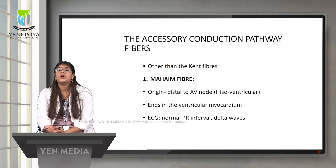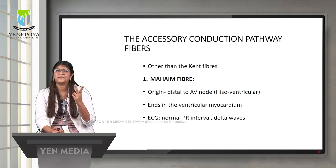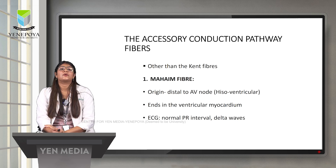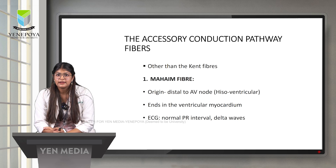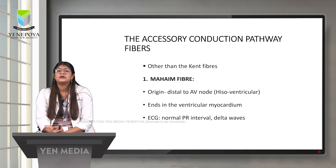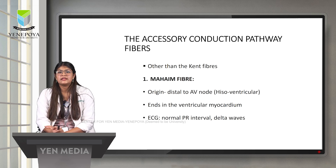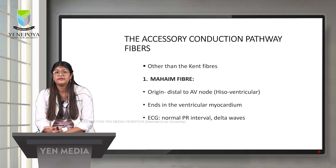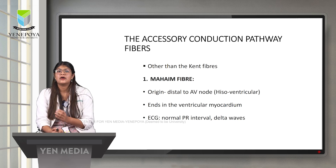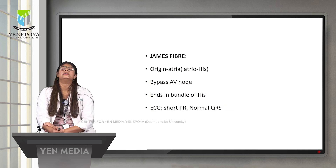In Mahaim fibers, although the PR interval is normal, conduction through the anomalous pathway bypasses the bundle of His and bundle branches, reaching the ventricle directly. As a result, the ECG shows a normal PR interval with the presence of delta waves.